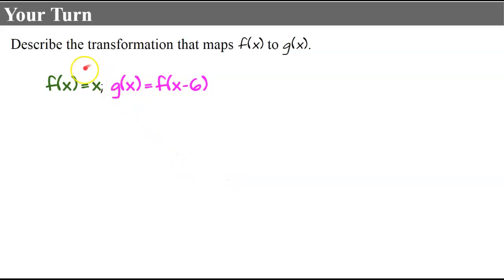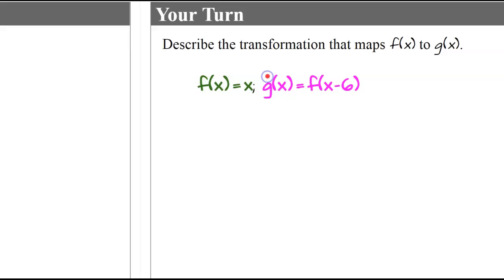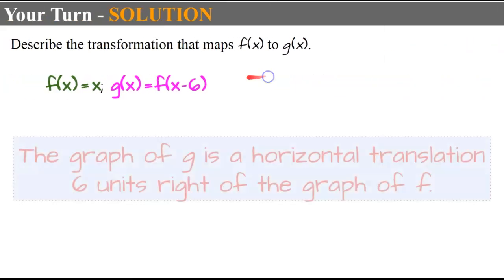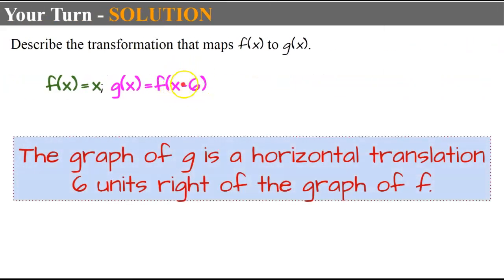Here's another one. Given function F and function G in terms of F, describe the transformation that maps F to G. This is happening to our input, so it's a horizontal translation 6 units to the right of the graph of F. Remember, it is subtract H — so H is positive 6, shifting to the right.